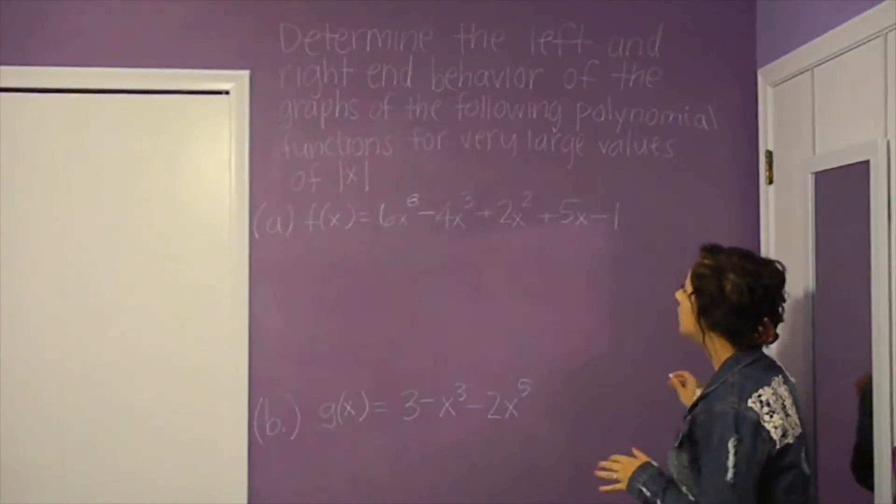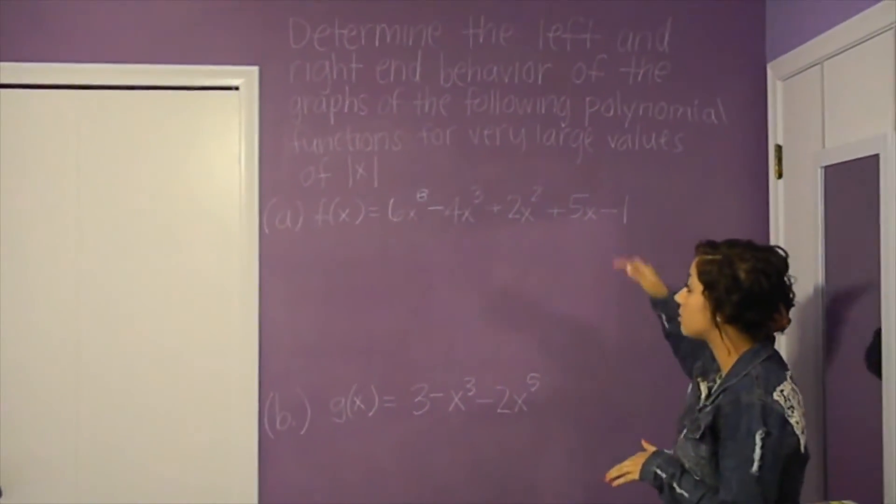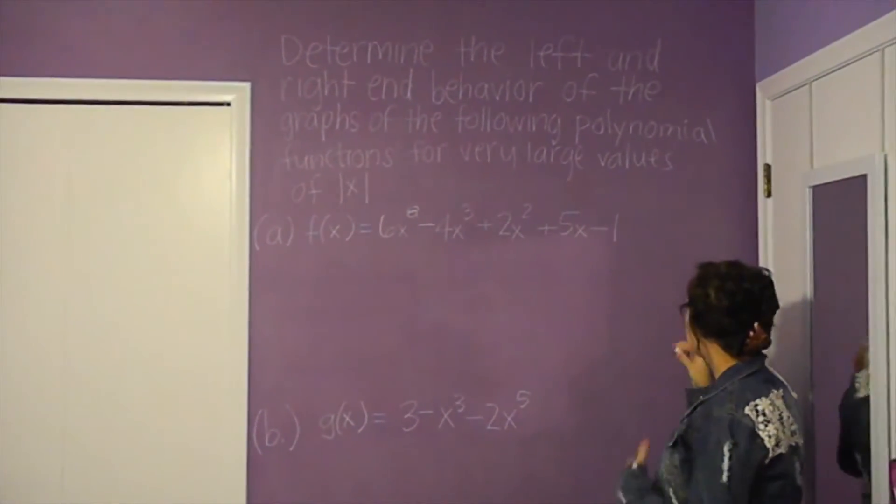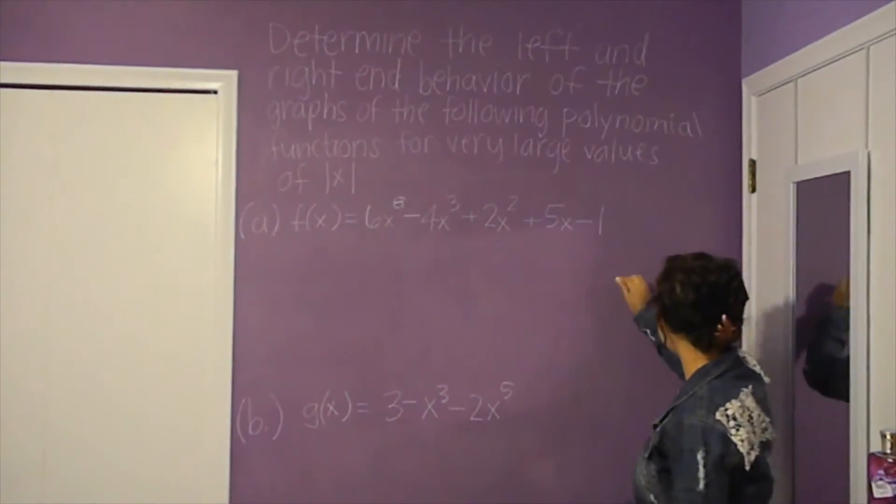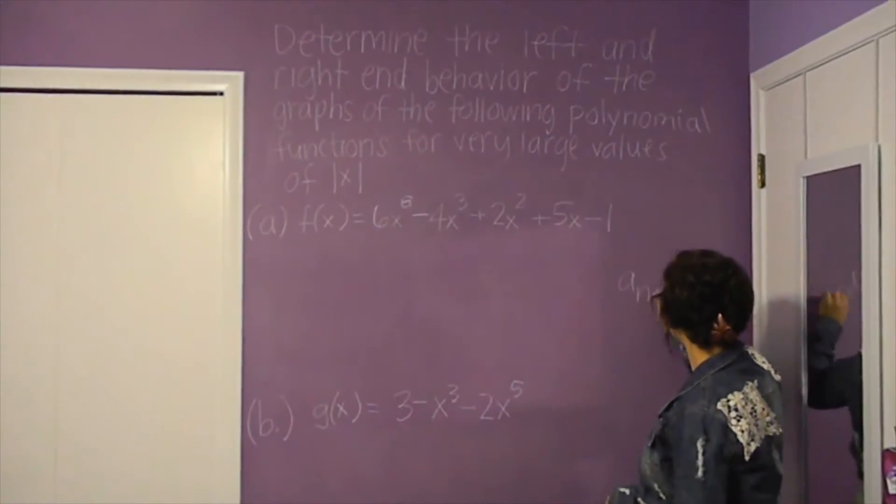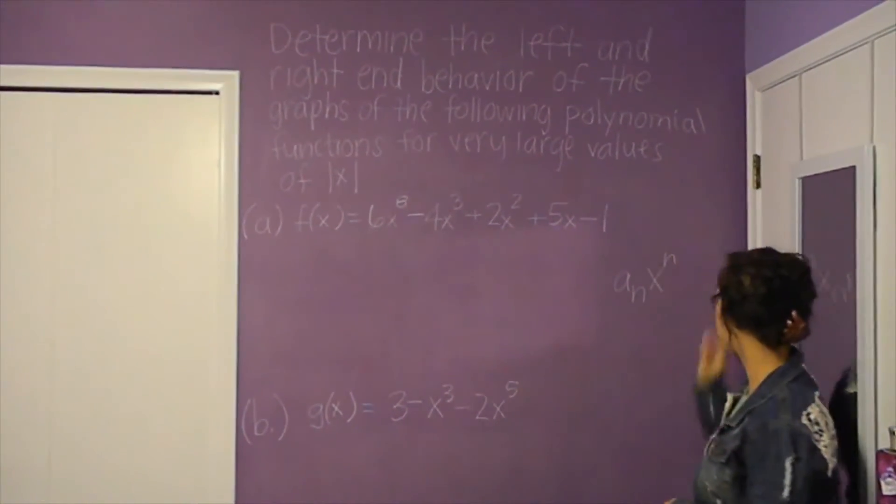A side note: every time you find the end behavior of a polynomial like this, you determine it by the leading term, which is a_n × x^n.